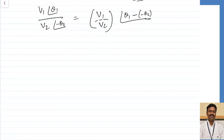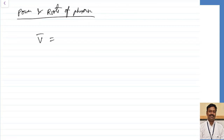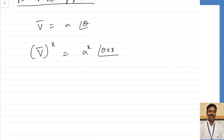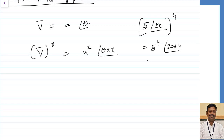For powers and roots of phasors: if V equals A at angle theta, then V to the power x equals A^x at angle (x times theta). For example, 5 at an angle of 20 degrees to the power of 4: take 5 to the power 4, and multiply the angle by 4 — this gives 625 at an angle of 80 degrees. It is that simple.